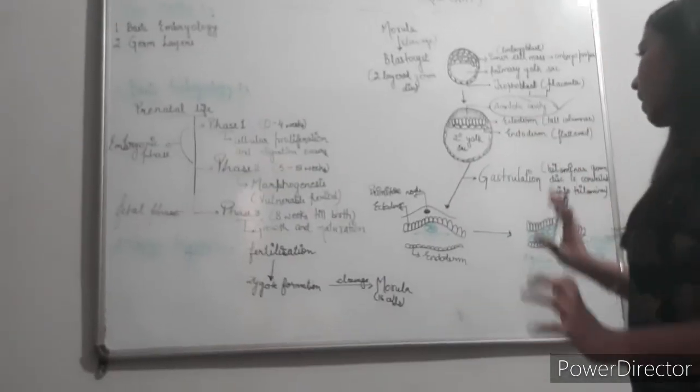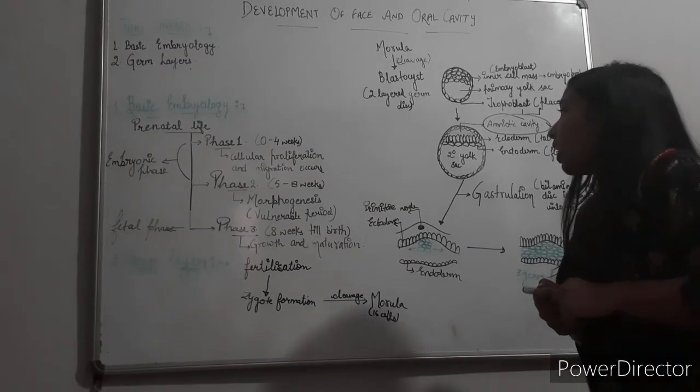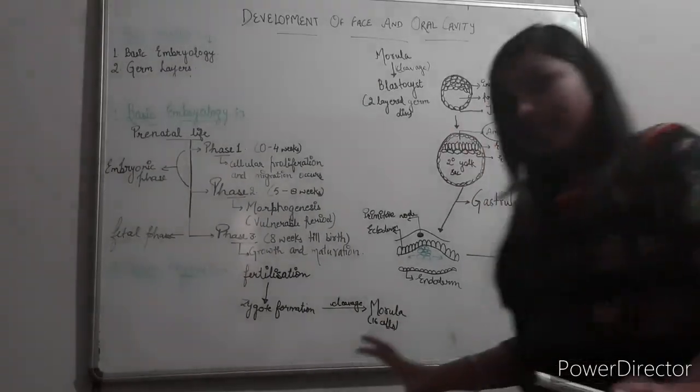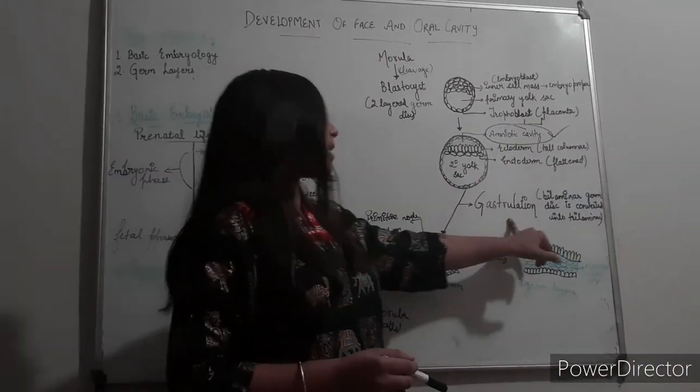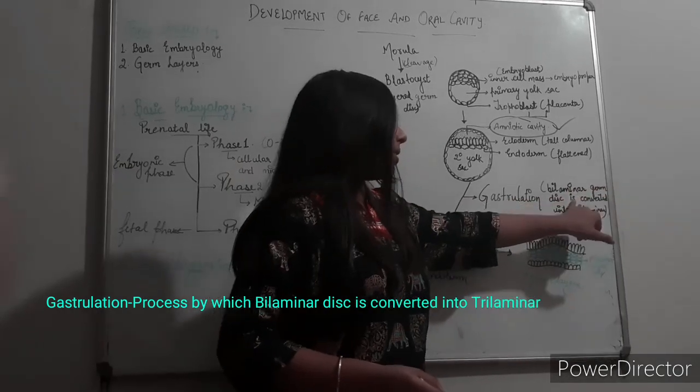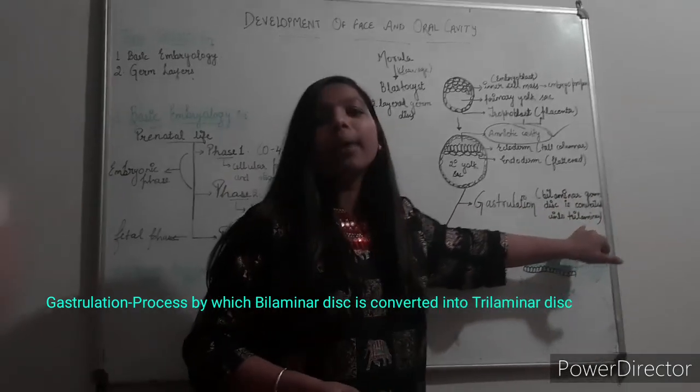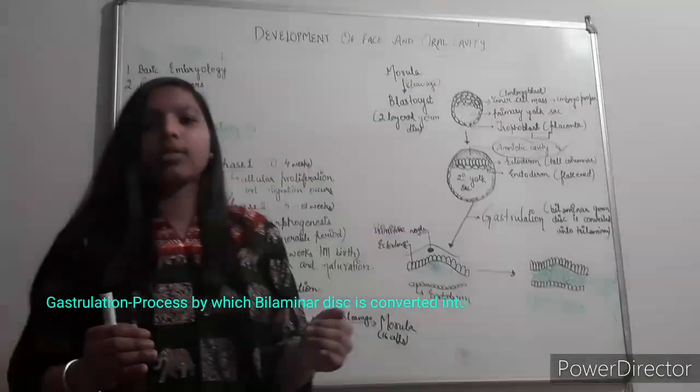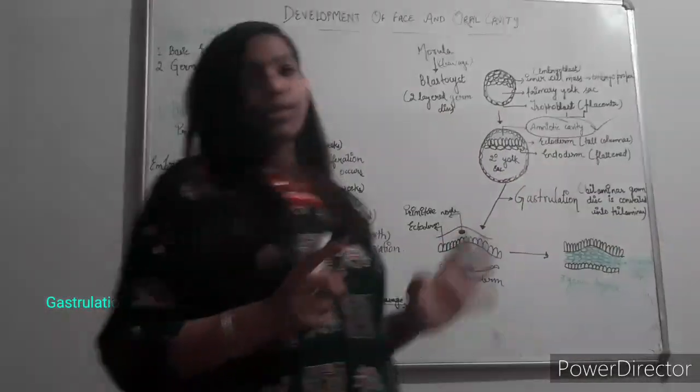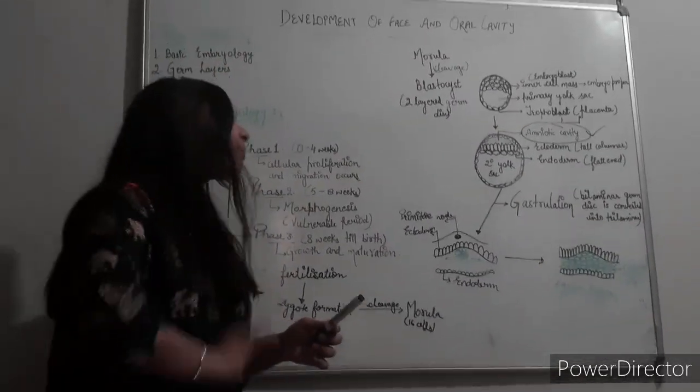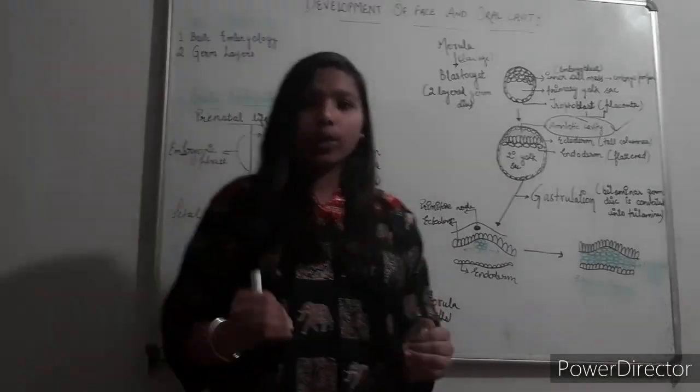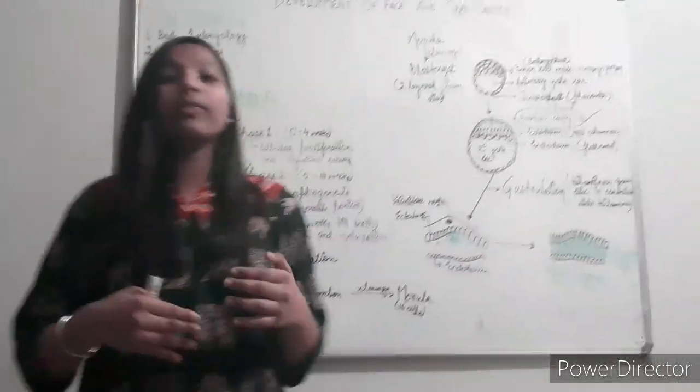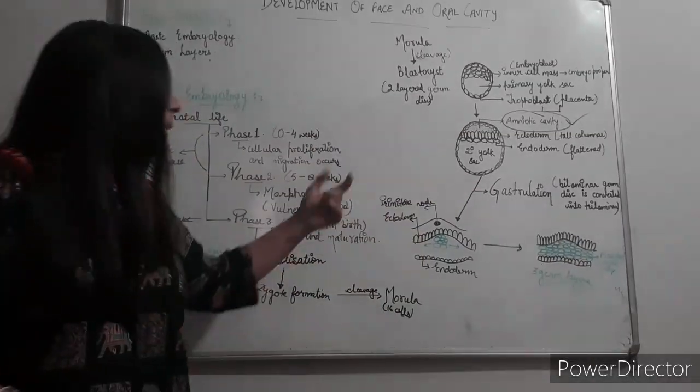Then this two-layer germ disc is converted into three-layer germ disc. This process is known as gastrulation. Bilaminar germ disc is converted into trilaminar germ disc, and this process is known as gastrulation. At this time, at the primitive node—primitive node is a structure which we'll discuss in further video—ectodermal cells proliferate.